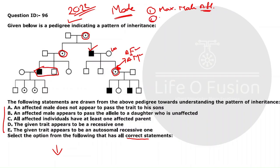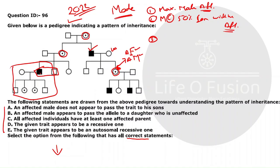The most important point: if the mother is a carrier, 50% of her sons will be affected, which means the chance of males being affected is higher. Another key clue: if the father is affected, all of his daughters will be carriers. Remember — affected father means all daughters are carriers.